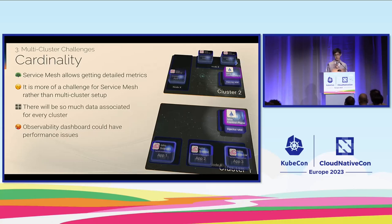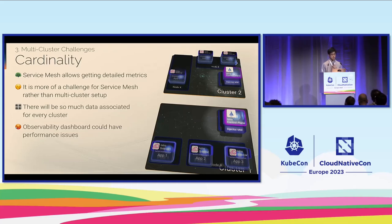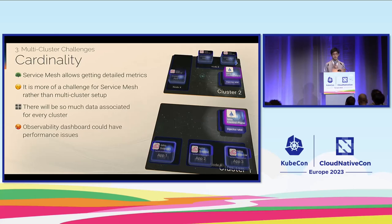Another challenge is cardinality. It's not only a multi-cluster challenge — it's more of a challenge for observability as a whole. But service mesh definitely allows getting very detailed metrics, which is a great aspect of Istio and service mesh solutions. However, there will be more data if you have more clusters, and the observability dashboard will be difficult to manage with that much data. Cardinality can be a difficult aspect even with a single cluster.